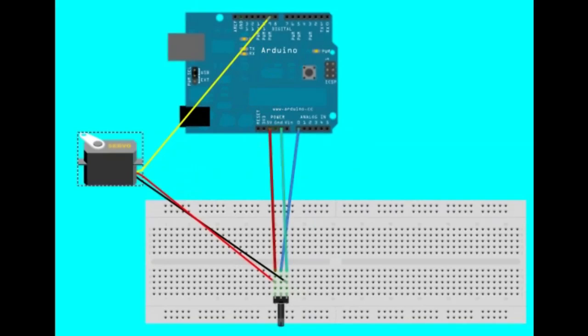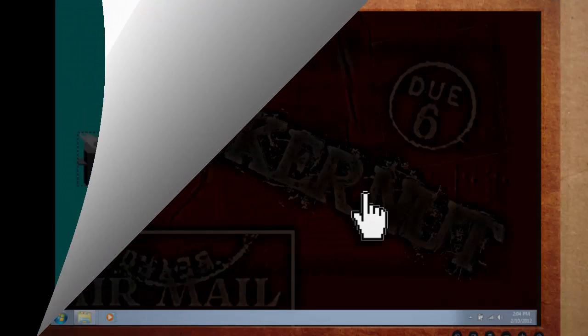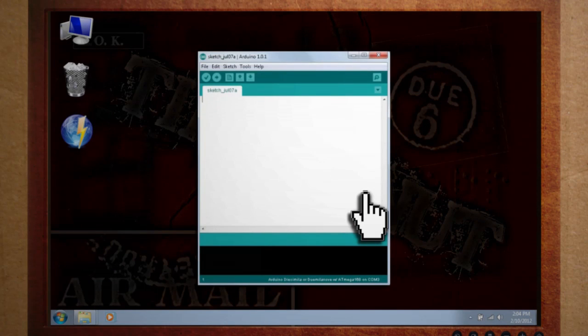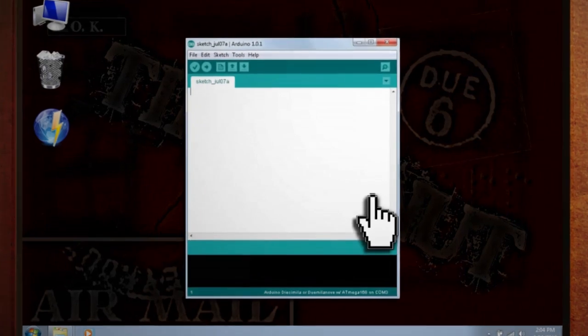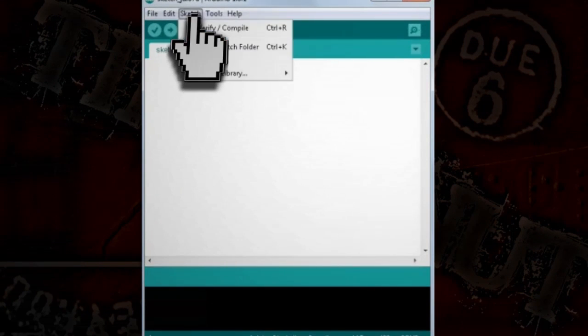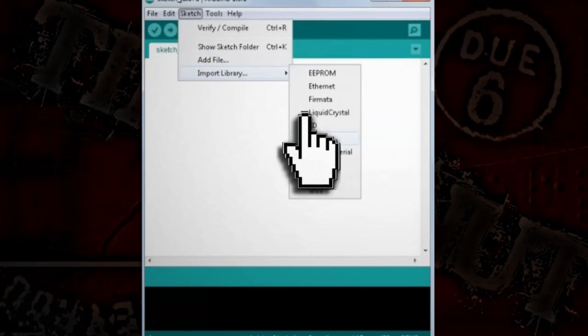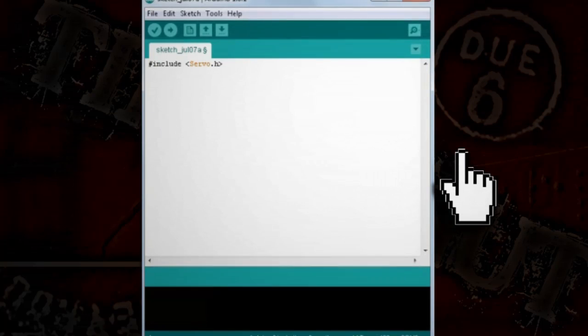Now plug that sucker into your PC and let's get coding. Arduino servo controls require a lot of specialized commands and instructions to operate, but luckily all that has been compiled into a dataset called a library. So if we want to include all those specialized servo commands, we can just go to sketch, import library, and choose servo.